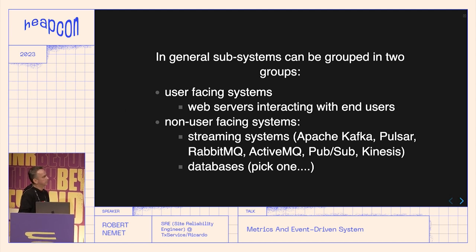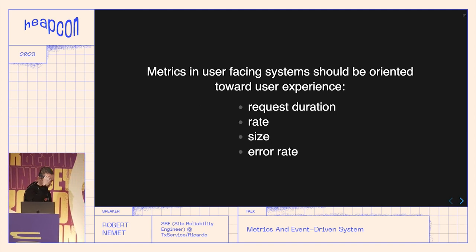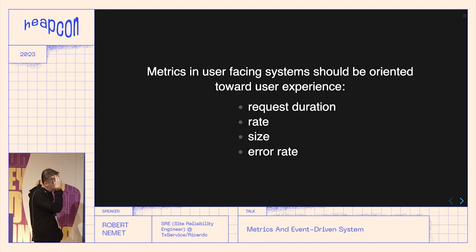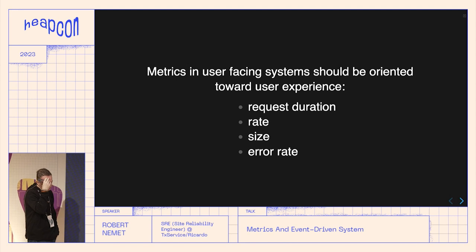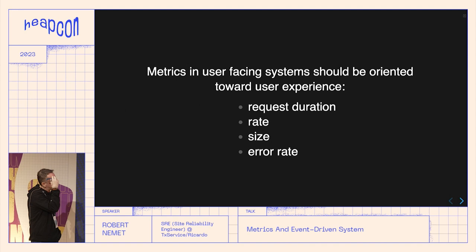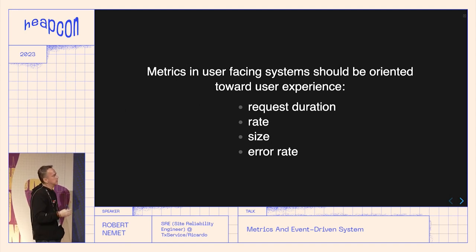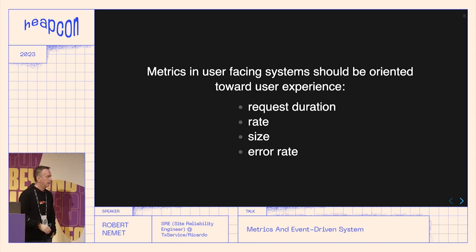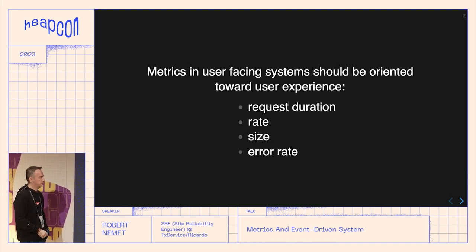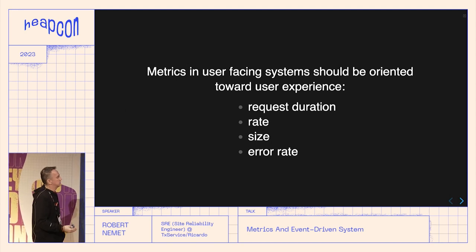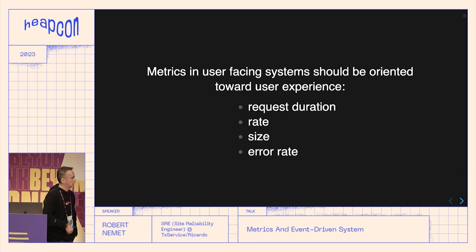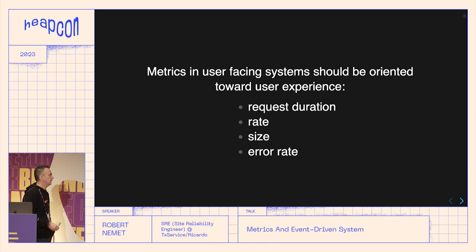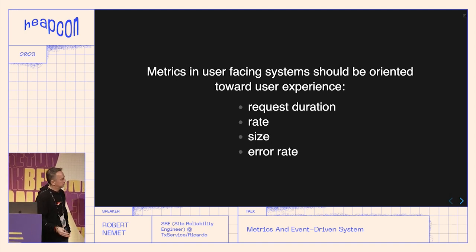For user-facing systems, measurements should be oriented toward user experience. The four key things are: request duration, request rate, request size, and error rate. This is what matters to your user — they need fast requests with low latency, the server needs to handle the load, message size matters because nobody wants to wait seconds for something to load, and if errors happen users have to retry actions, which you want to avoid.